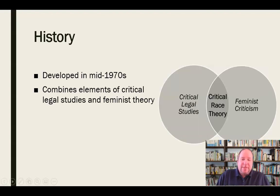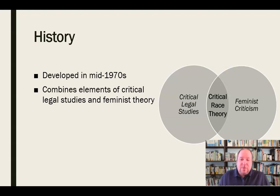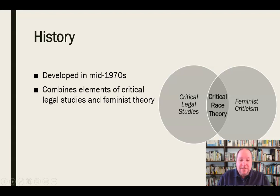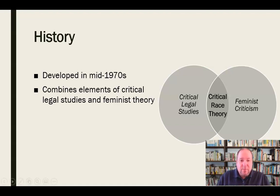Critical race theory combines elements of critical legal studies — looking at how race is reflected in the legal system in the United States — with feminist theory, because there is a lot of crossover in how those areas would be viewed. So the critical lens of critical race theory comes from that combination of critical legal studies and feminist criticism that had been developed previously.